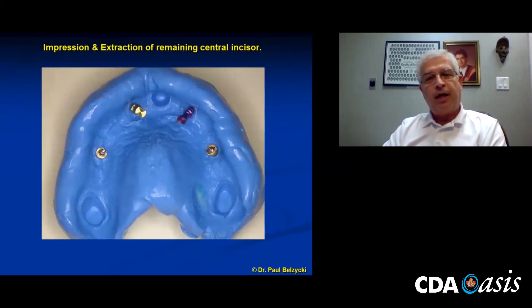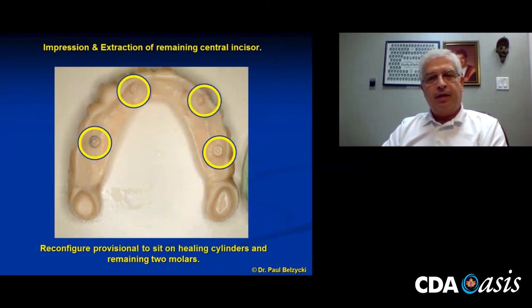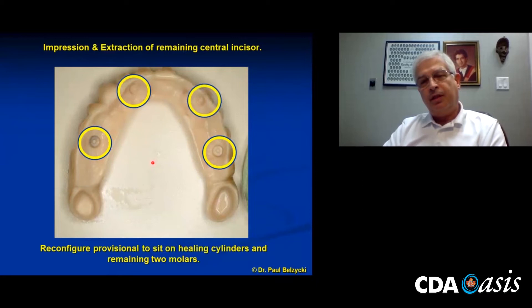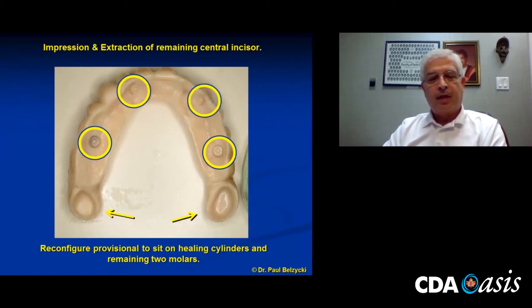The wonderful thing about methyl methacrylate acrylic, which I'm always harping on, is that you can add to it an indefinite number of times. After the caps were replaced, I just relined the undersurface so it would hang on to the two molars and sit on top of the healing caps. That provided some good stability while waiting to transition into the final prosthesis. We reconfigured it and were able to keep him out of a full upper denture the entire time.